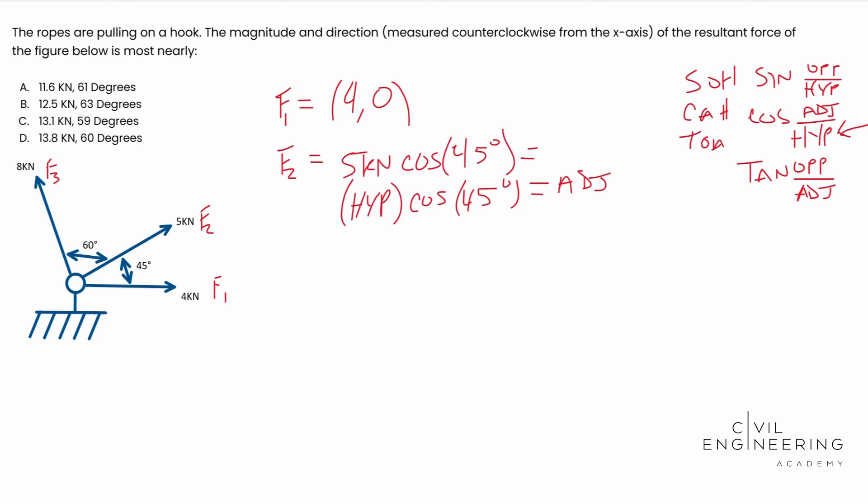I did the hypotenuse times the cosine of 45 degrees. That's what we're dealing with, equals the adjacent force. So go ahead and plug that into your calculator, and I ended up with 3.54. It looks like I wrote down 3.53, so we're going to go with that.